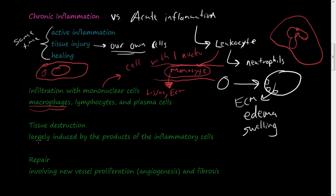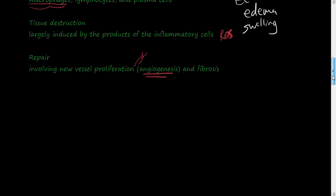Tissue destruction is largely induced by the products of the inflammatory cells - a lot of reactive oxygen species and other byproducts of this battle. Our cells get destroyed in the process. Undergoing repair involves angiogenesis, which is new vessel proliferation or growing new blood vessels into the area, and fibrosis.